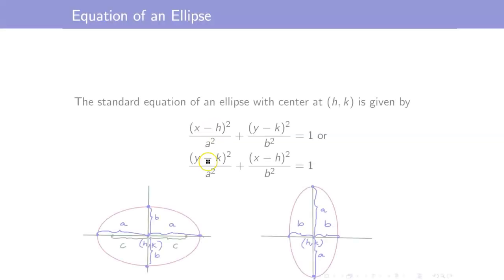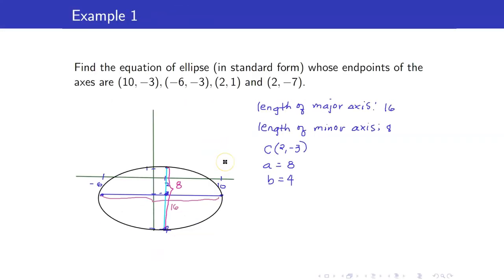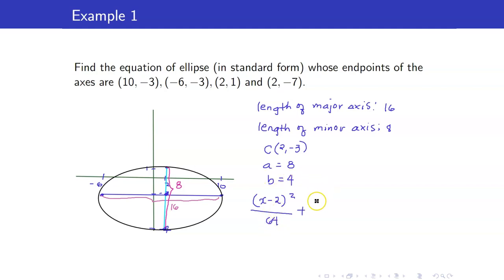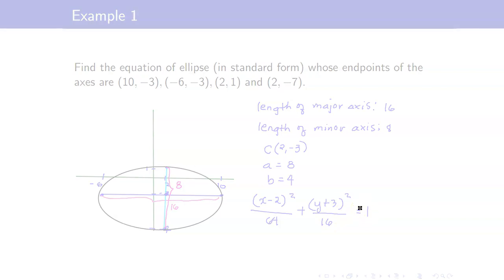Since we have a horizontal ellipse, a goes with x. So the equation is: (x − 2)² / 8² + (y − (−3))² / 4² = 1. This is the equation of our ellipse.